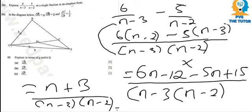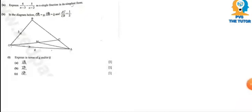So we are done. Let's look at part B. Question B says in the diagram below, vector OA is equal to A and vector OB is equal to B, given that AC over CB is equal to 1 over 2. So we need to understand what this means. What that means is AC is in the ratio with CB, which is 1 to 2.